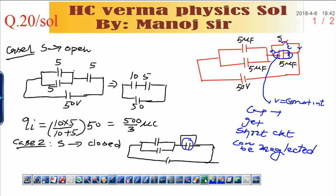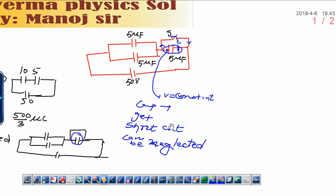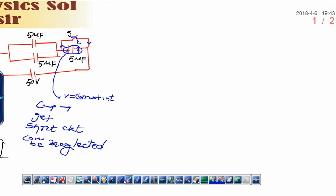Now, if this is neglected, then circuit becomes like this. Simply, circuit is like this. It is 50 volt. This is 5. And, this is also 5.